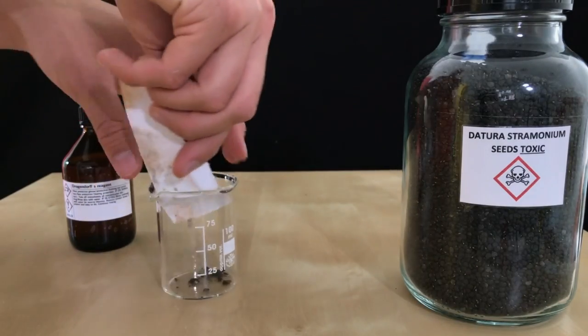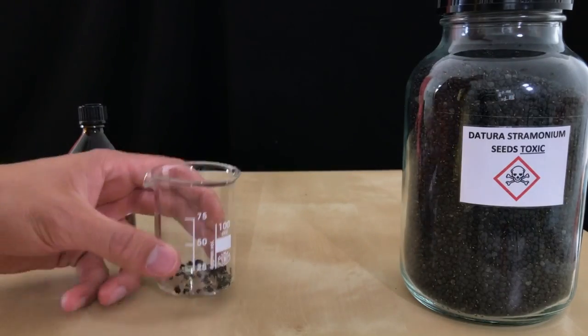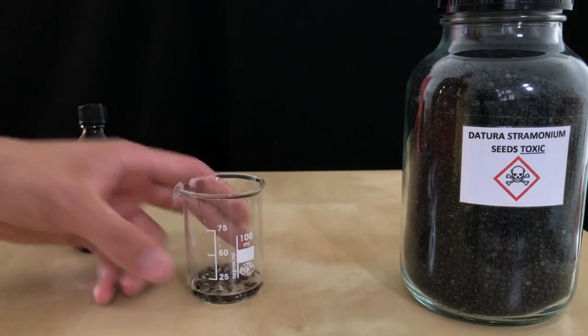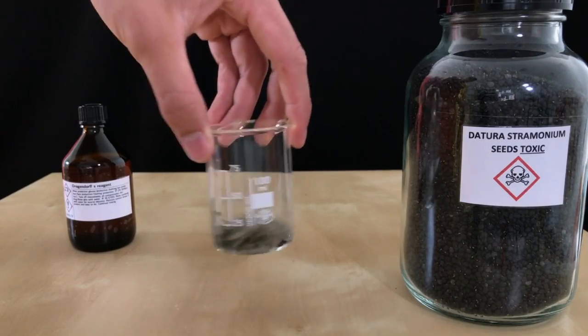Some crushed up Datura seeds were added to the beaker followed by about 10 milliliters of distilled water. To make all the contents wet it was swirled around a few times and afterwards allowed to stand like this for 5 minutes.